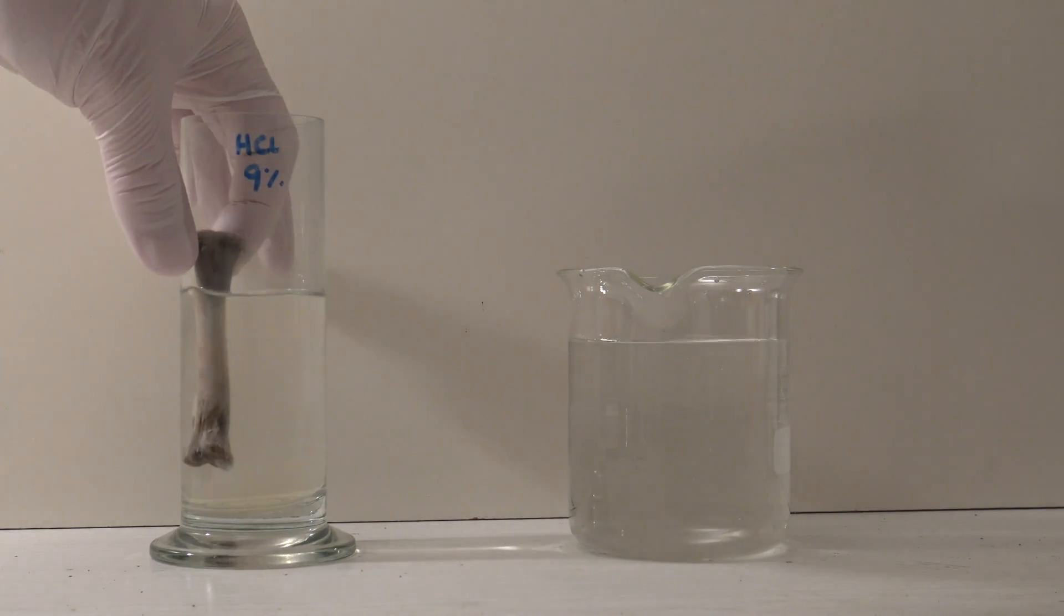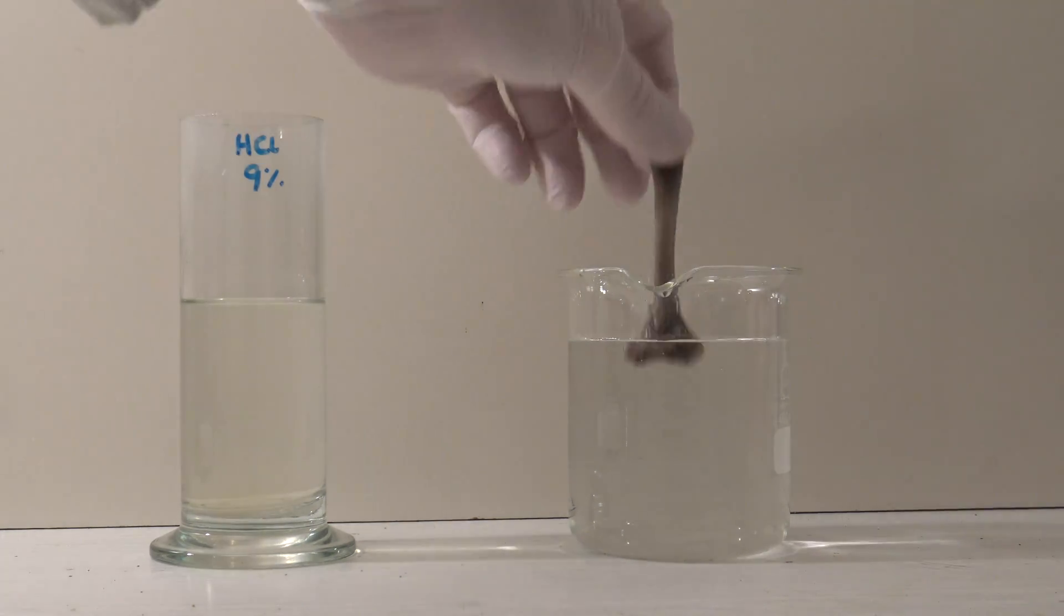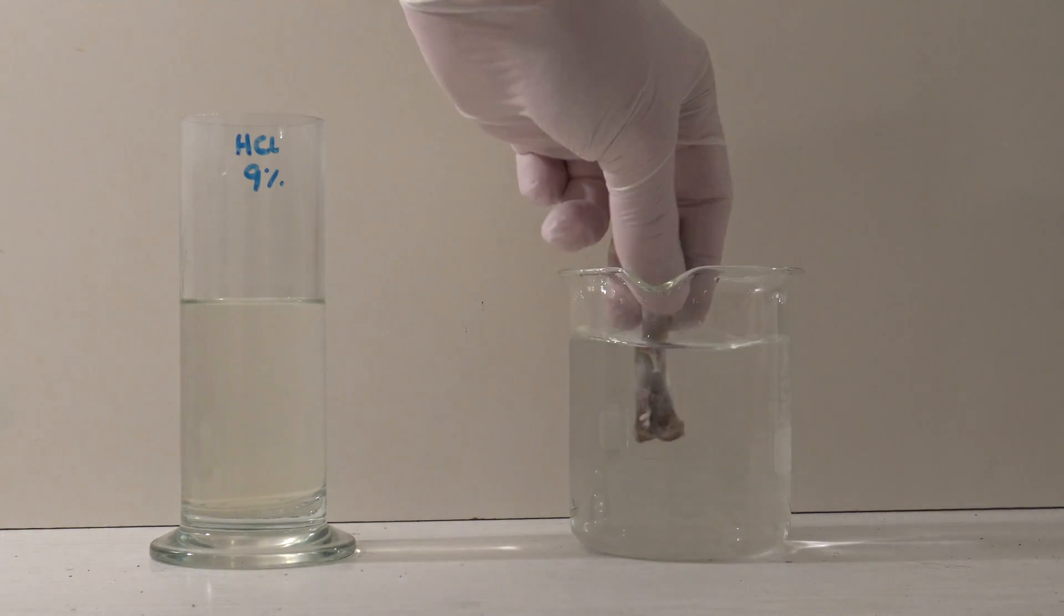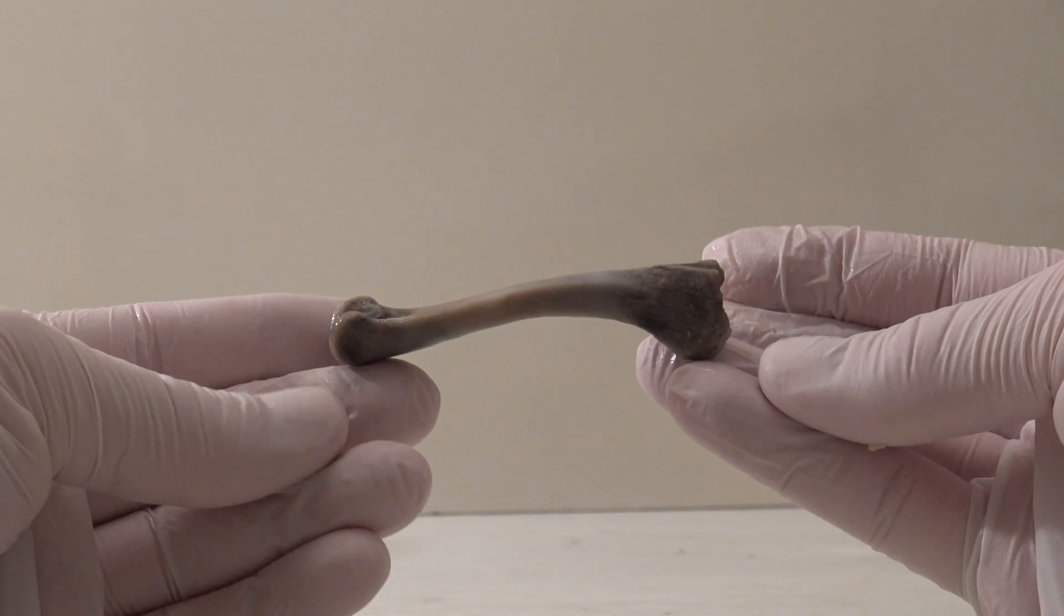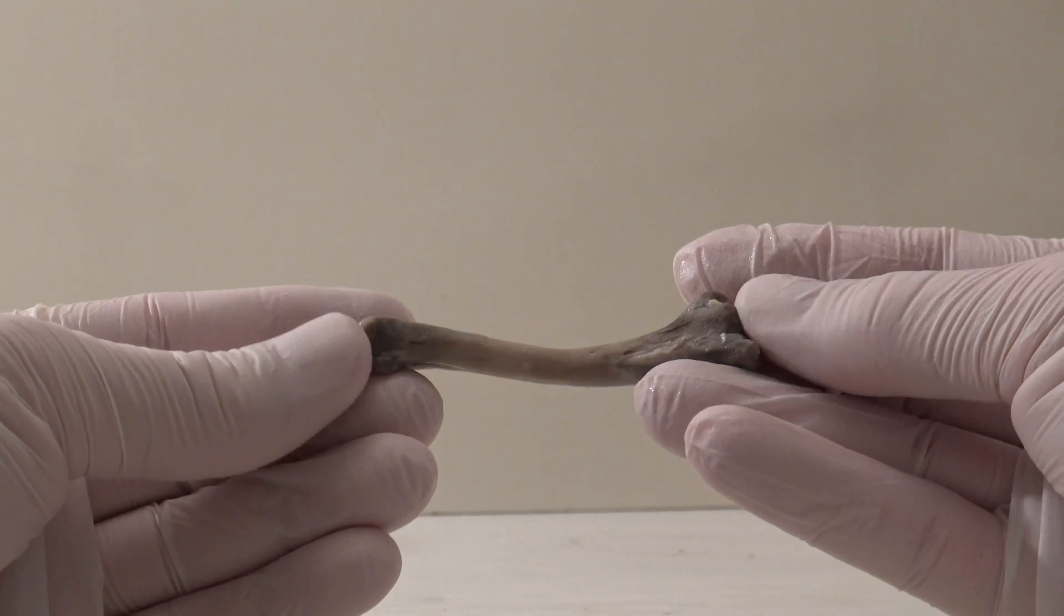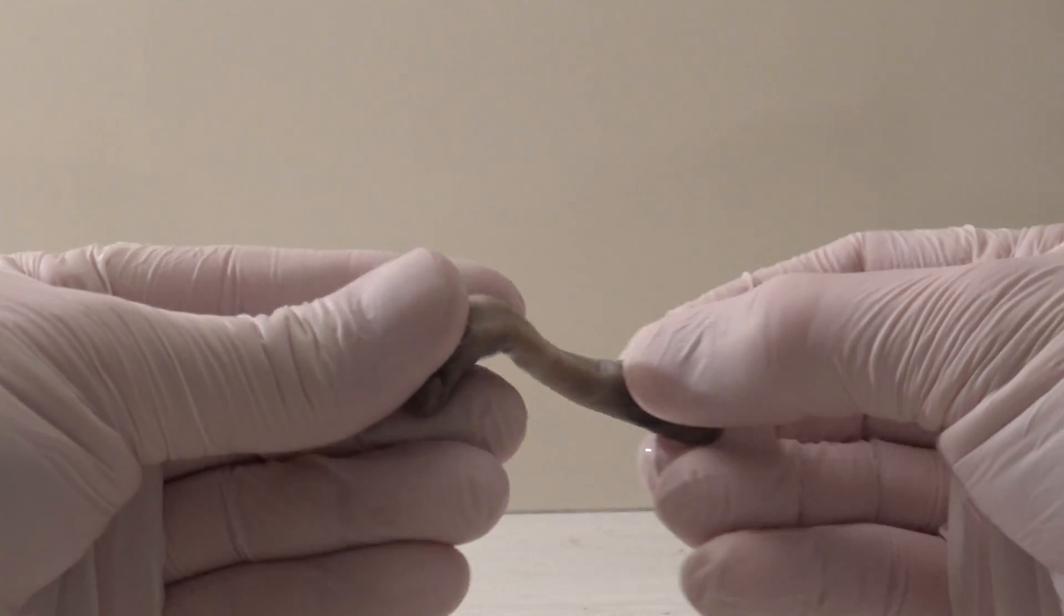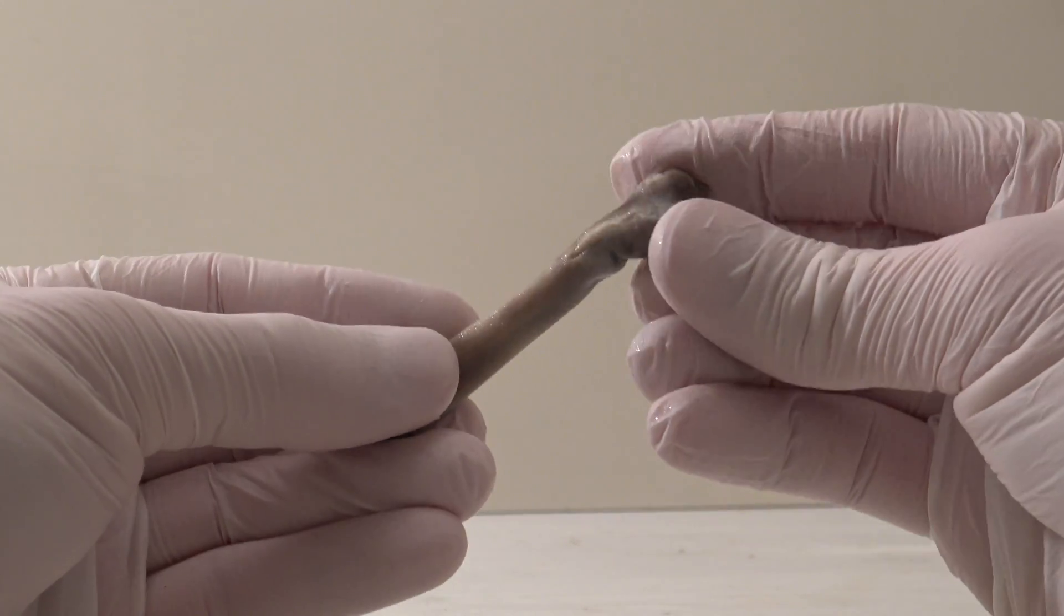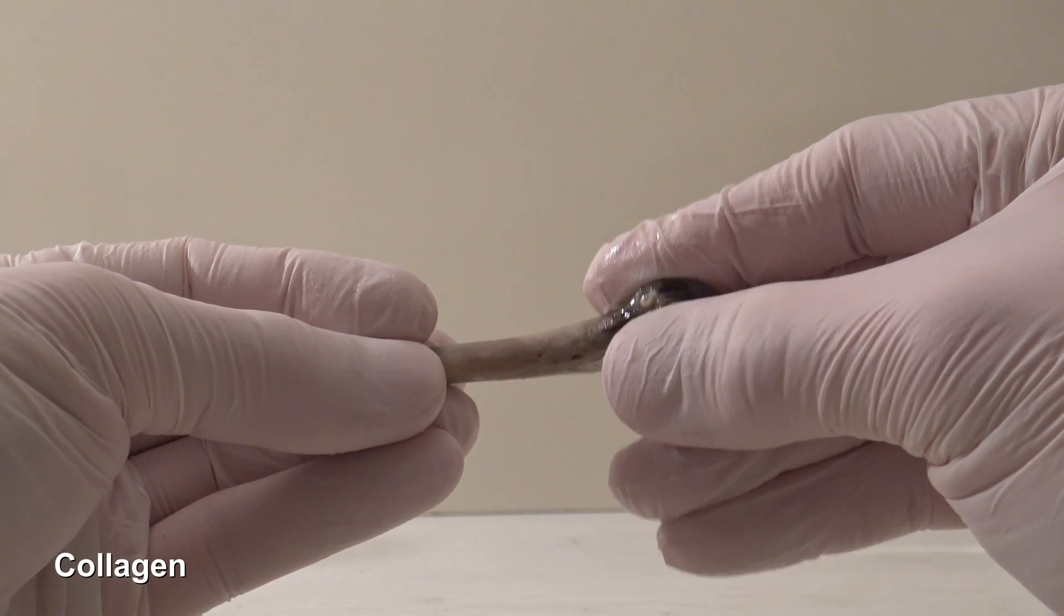Next the acid was washed off with some water but it has to be taken care because there will still be acid on the inside. Visually the bone looks pretty normal but it becomes interesting when it's bent because it is now as elastic as rubber. The acid has dissolved the solid calcium lattice and the flexible collagen fibers and other organic tissues were left over.